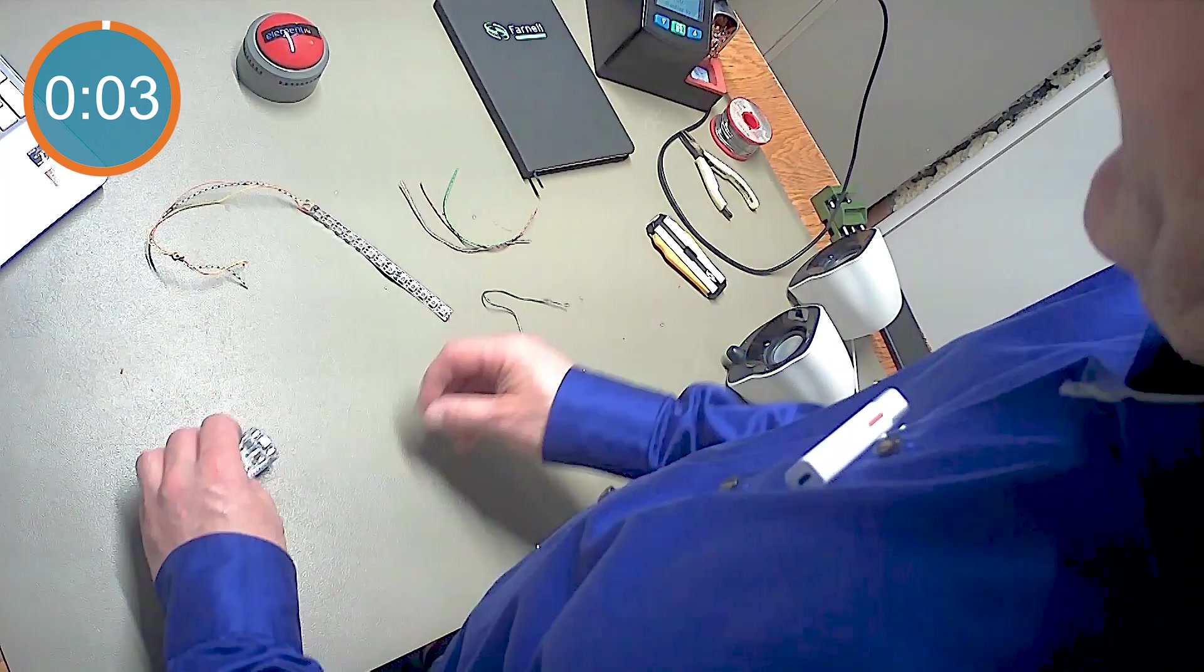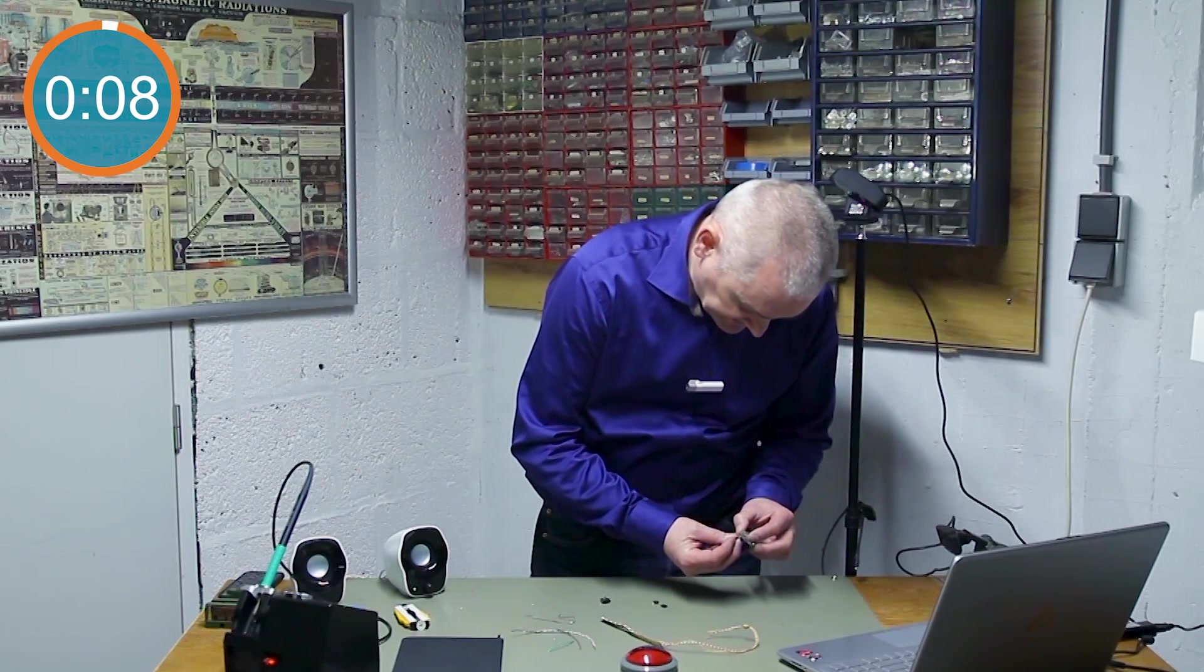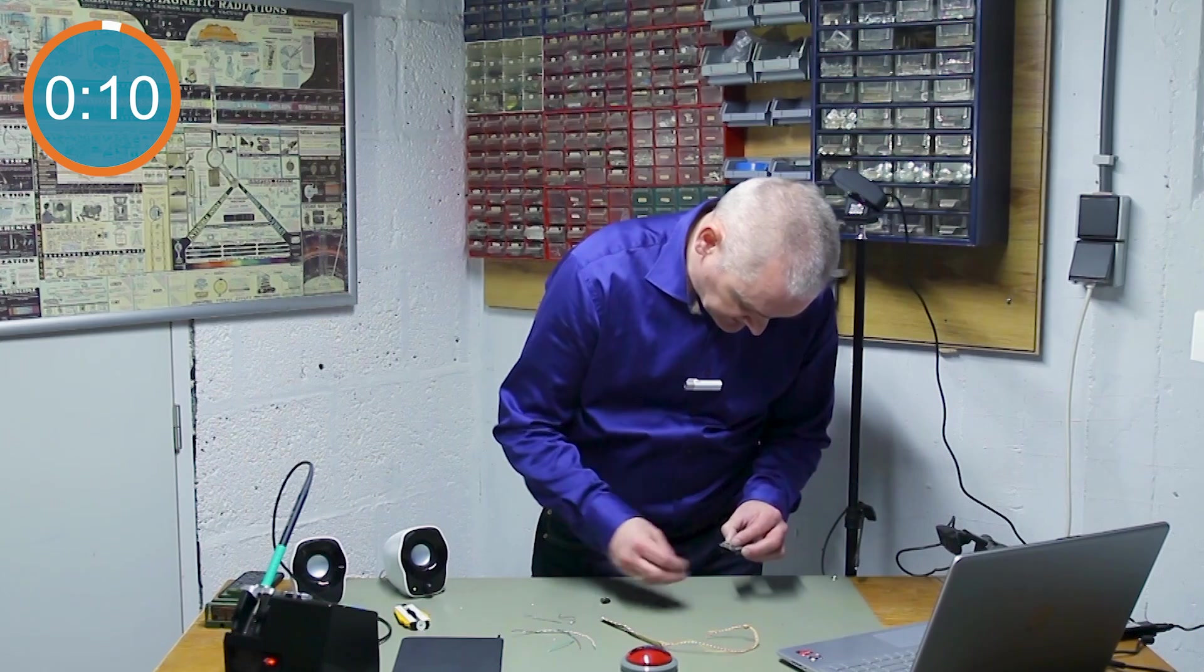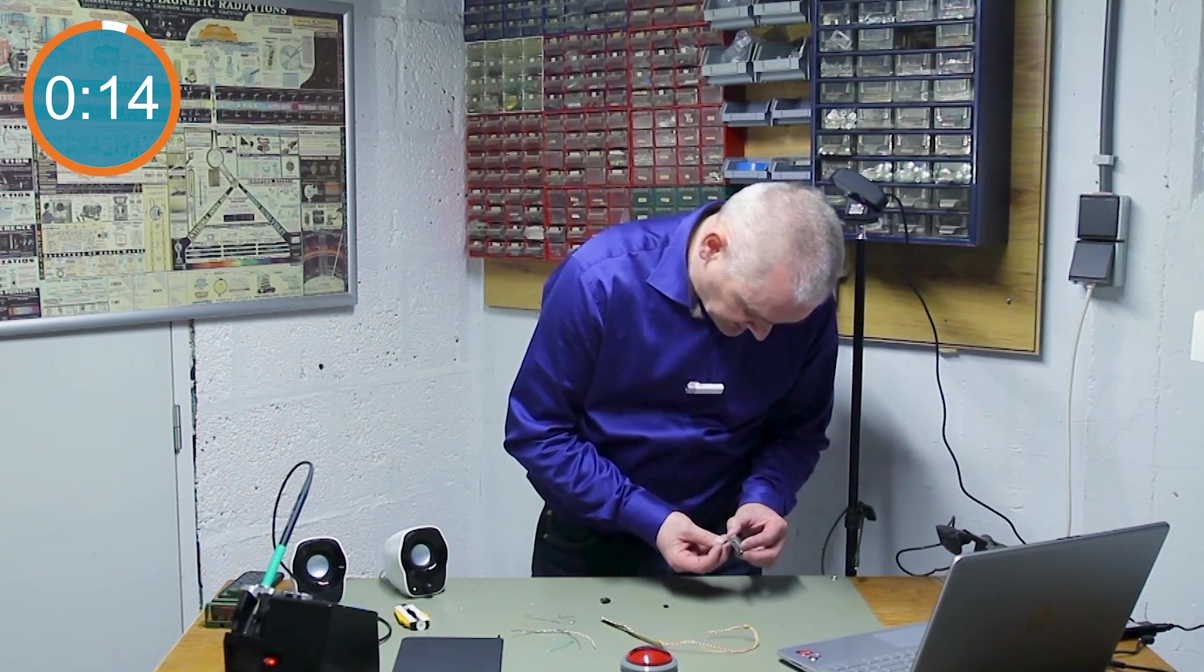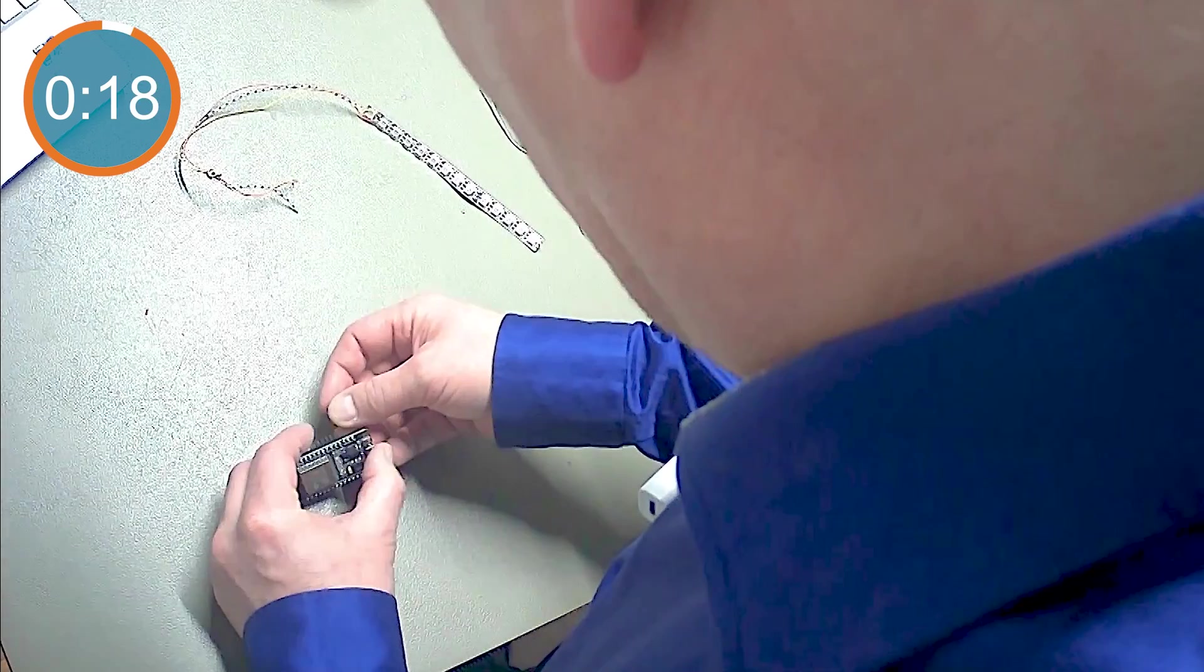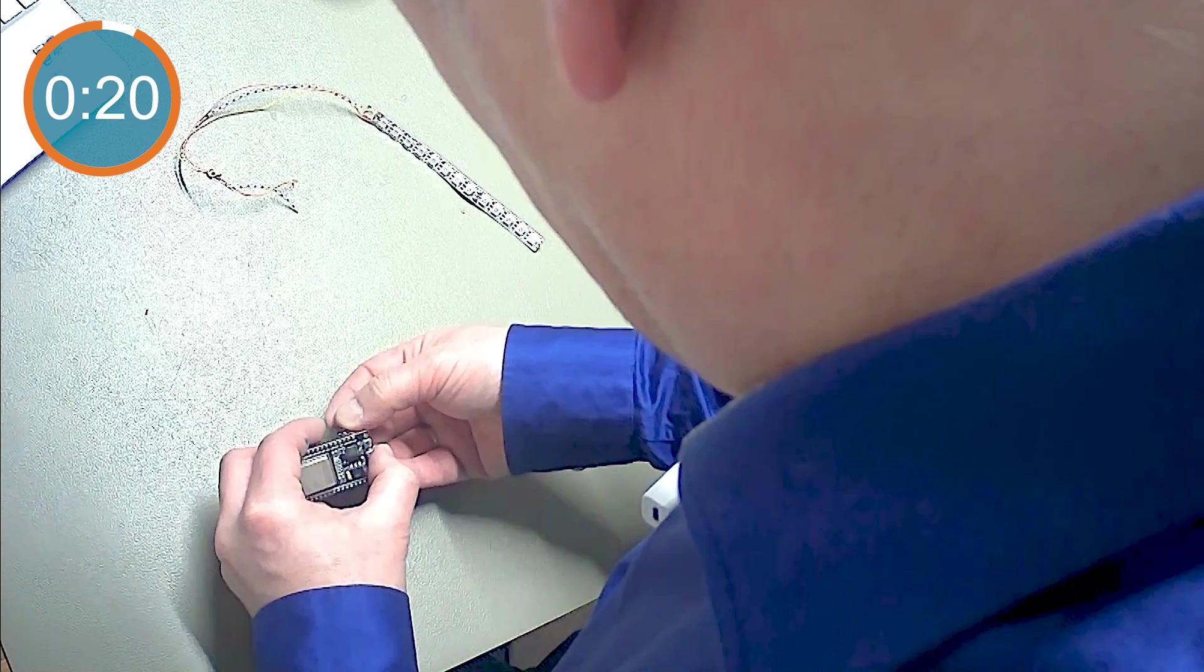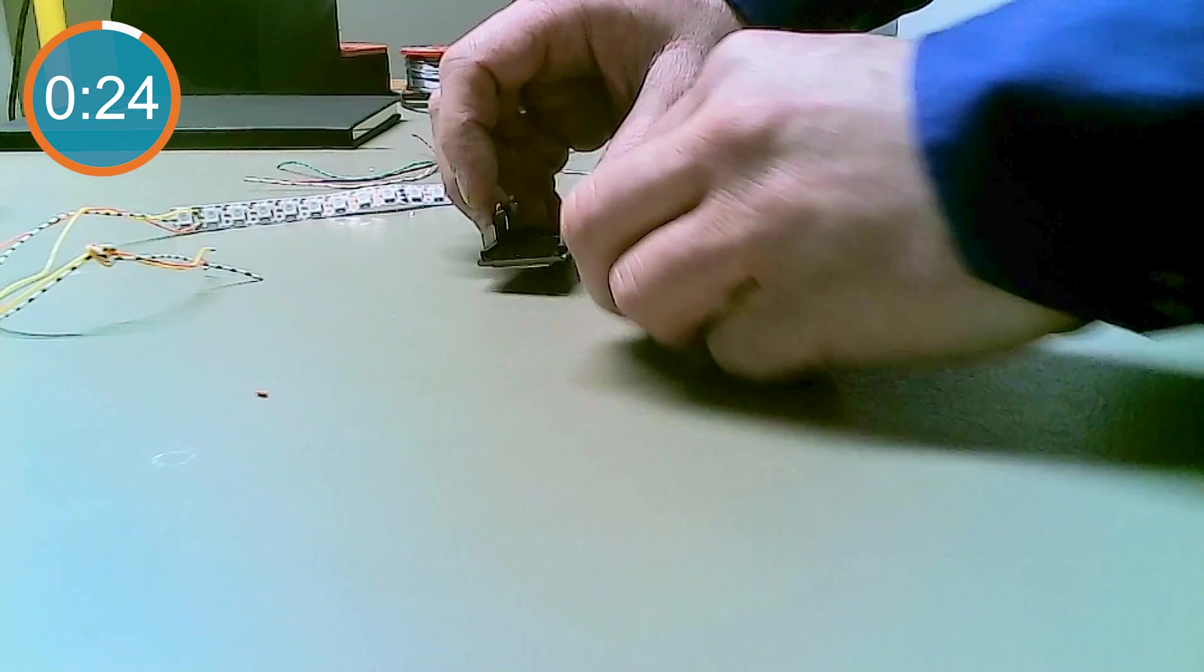First, I'm going to take the ESP32 and I will add some headers because I don't want to solder directly onto the PCB because I might use this controller again later. It's always good to have some headers laying around. And then I'm going to solder some wires.